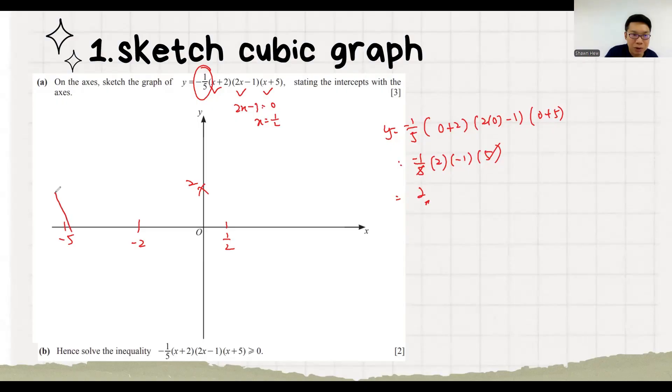Then we know the graph is actually going down, going up, then come back down. Usually this kind of question they will continue with solve the inequality based on the graph. They say this whole thing is more than or equal to 0. So we know this whole thing is actually y. It means that the y is more than 0. So y is more than 0. We need to draw a horizontal line. Y equals 0 is here.